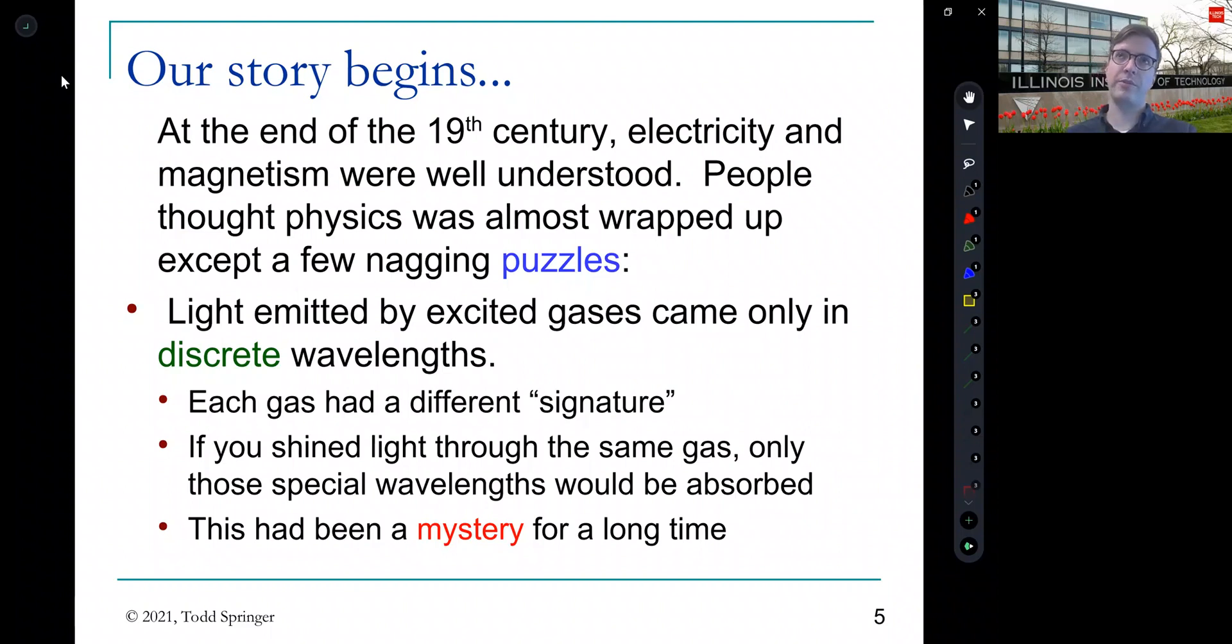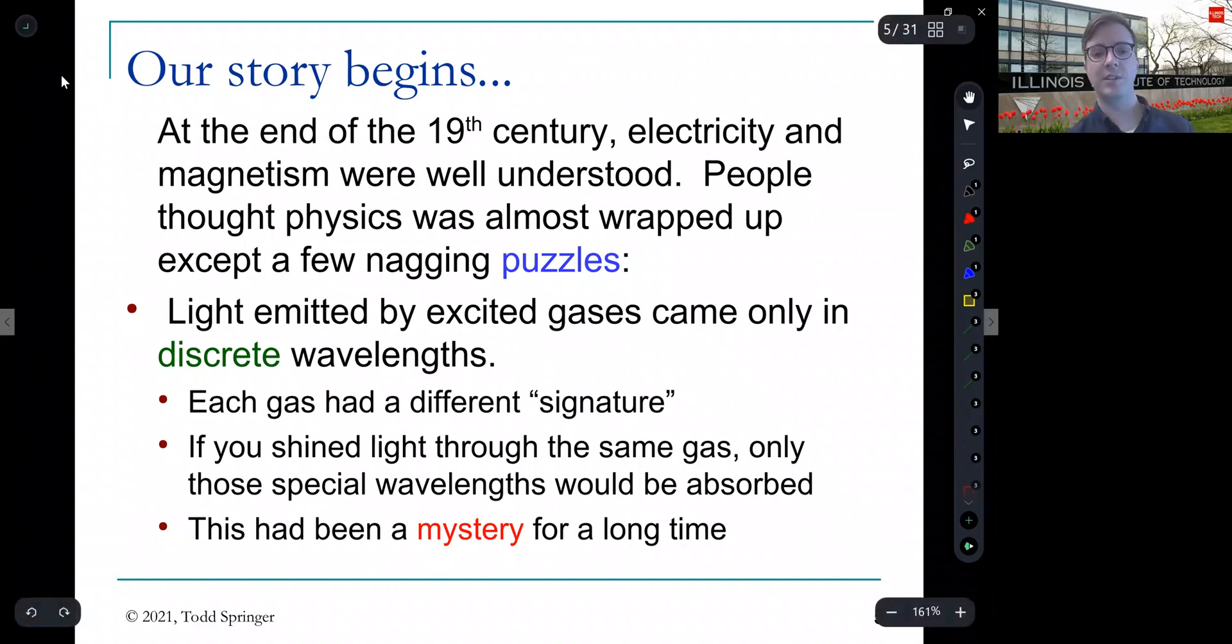And then sort of the reverse of that happens, that if instead you shined a bunch of light through a gas of, say, hydrogen or helium or mercury, you would see the kind of reverse situation. You'd see that only a few wavelengths of light were taken out or absorbed by the gas. And this had been a mystery for a long time, for decades. People had observed this, but no one really understood what was going on with these gases. Why did they only emit certain wavelengths?